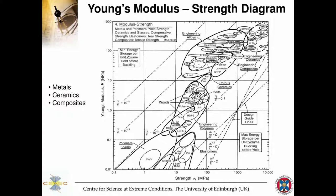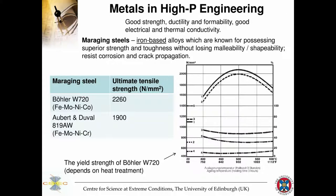A useful diagram found in most materials books is Young's modulus versus strength. On the low end you have soft materials like silicones, cork, polymer foams, and elastomers. At the high end you have tungsten carbide, diamond, and silicon carbide. In between are ceramics, porous ceramics, engineering composites, woods, metals, and alloys. This is very useful when deciding on material properties for pressure cell construction.